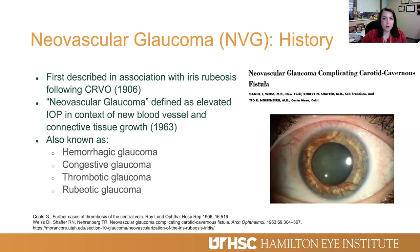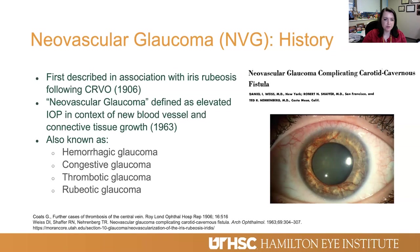Neovascular glaucoma, or NVG, was first described in association with iris rubiosis following a central retinal vein occlusion in a write-up dated back to 1906. It was further defined as elevated intraocular pressure in the context of new blood vessel growth and connective tissue growth back in 1963. It goes by other names historically: hemorrhagic glaucoma, congestive glaucoma, thrombotic glaucoma, and rubeotic glaucoma.